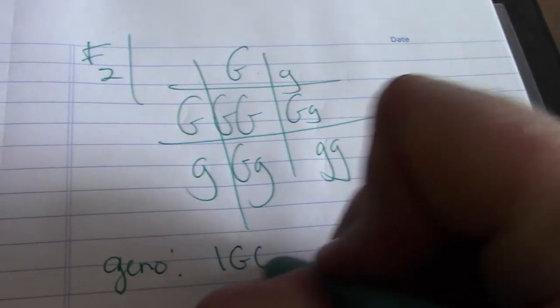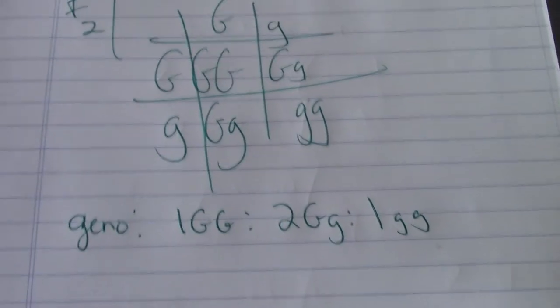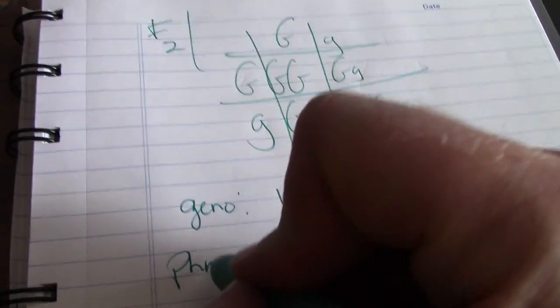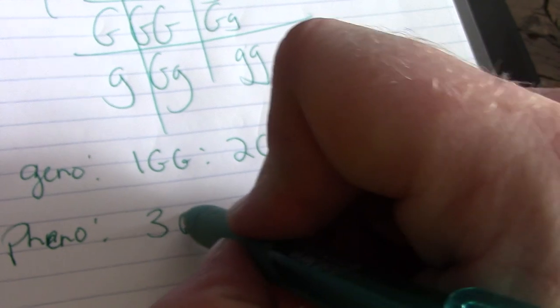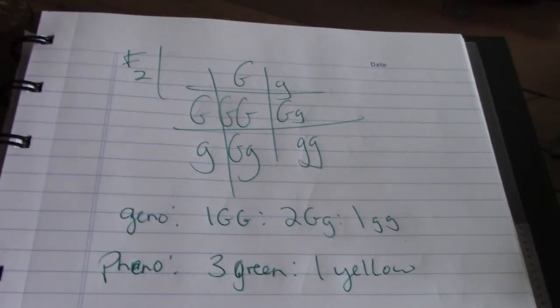So if I look at my genotype, I'm going to have one big G, big G, to two big G, little g, to one little g, little g. Or 25% big G, big G, 50% big G, little g, 25% little g, little g. But your phenotype should be three green and that's what this shows.